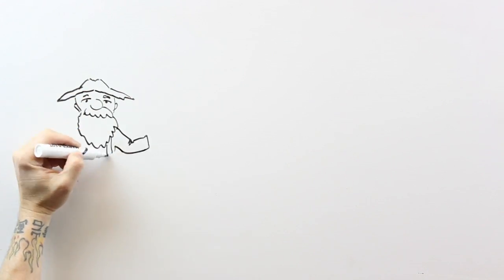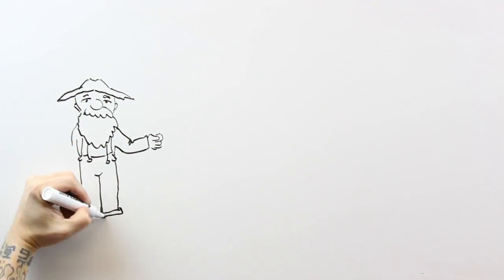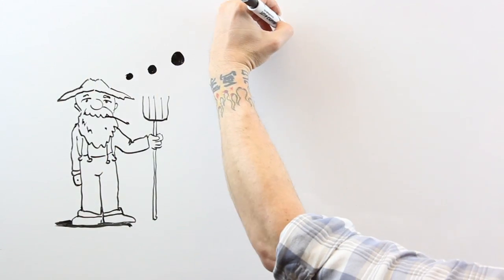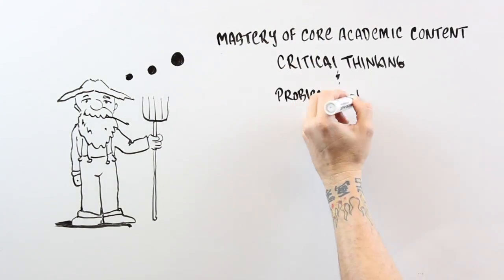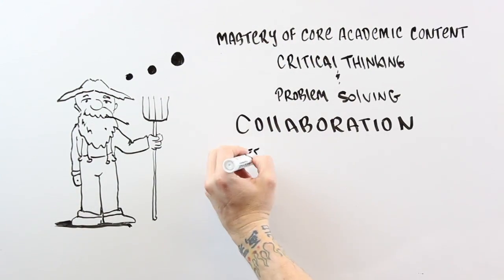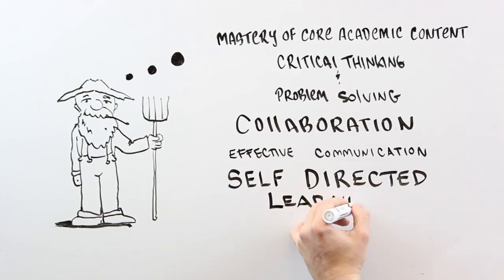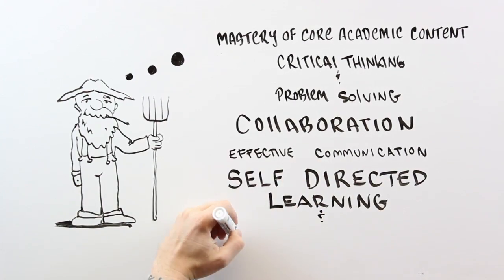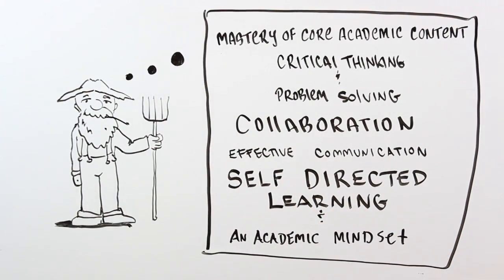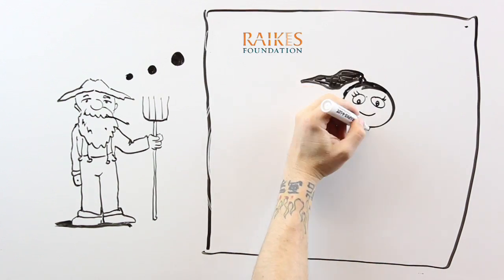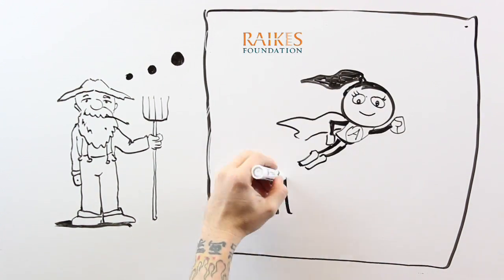The Hewlett Foundation has defined deeper learning as students mastering core content, thinking critically, collaborating well with others, being effective communicators, being self-directed learners, and possessing academic mindsets. The last two — self-directed learning and academic mindsets — the Raikes Foundation has defined as students having agency.